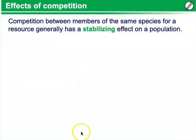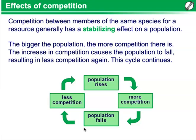Effects of competition. Competition between members of the same species for a resource generally has a stabilizing effect on a population. The bigger the population, the more competition there is. The increase in competition causes the population to fall, resulting in less competition again, and so the cycle continues — more competition leads to populations falling, therefore there is less competition, which causes the population to rise again.